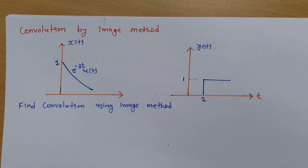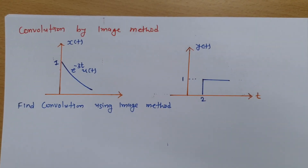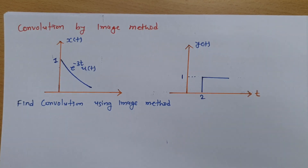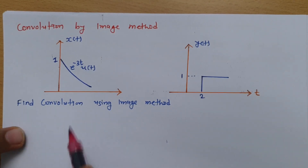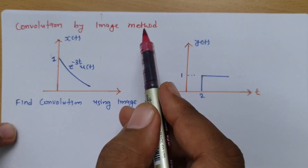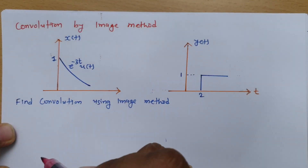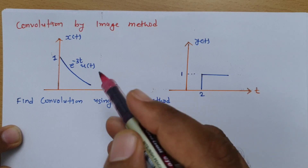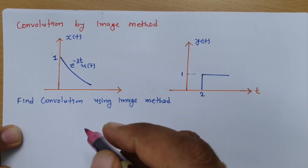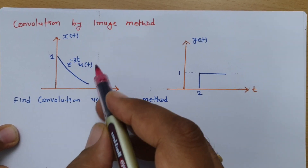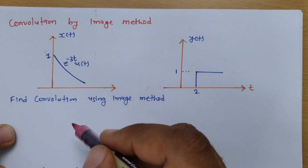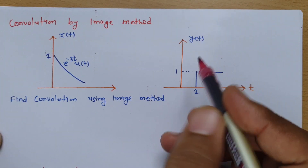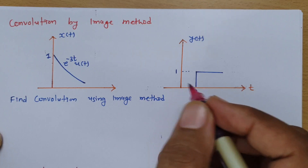Welcome to the signal and system lecture series. In this session I'll be explaining convolution by image method, which is the method we need to utilize when two signals are given in terms of waveform. This is a very interesting method.